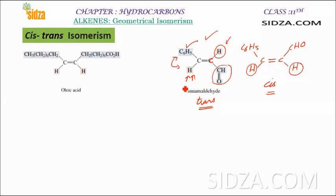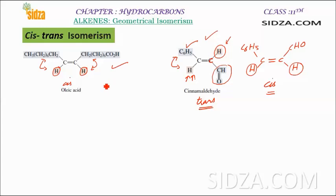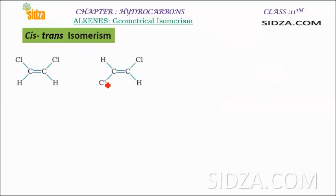What about oleic acid? Again, the two groups on each carbon are different, so geometrical isomerism is possible. In oleic acid, the hydrogen atoms are on the same side of the double bond, so this is called the cis isomer. If the hydrogen were placed on the opposite side, it would be the trans isomer. Similarly, for 1,2-dichloroethene with chlorine and hydrogen on each carbon, one arrangement is the cis isomer and the other is the trans isomer.